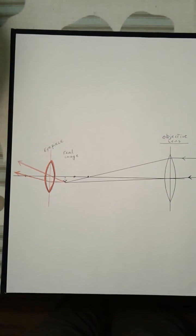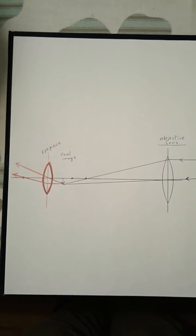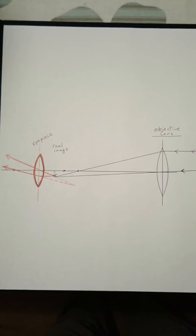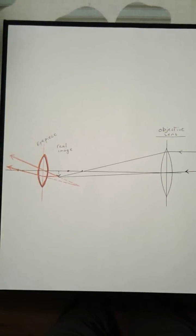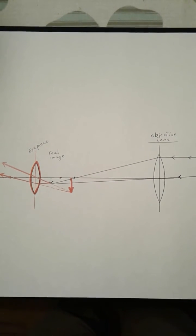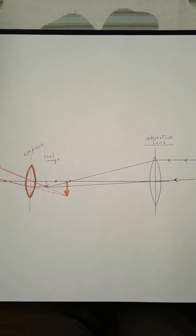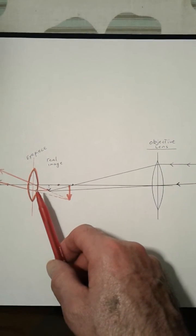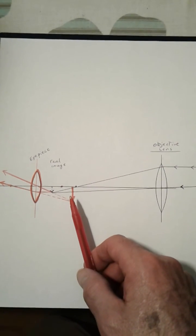Now where do I think these light rays have come from? I have to back trace them. My eye perceives the image at that intersection. So the objective takes the object and brings it really close so that I can use an eyepiece as a magnifying glass to enlarge it.